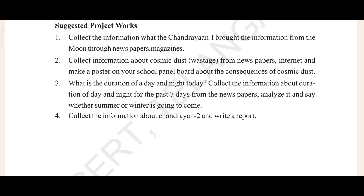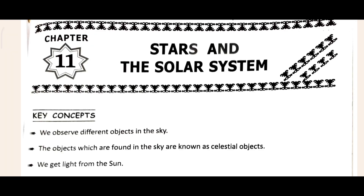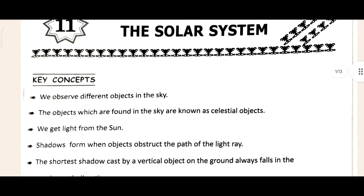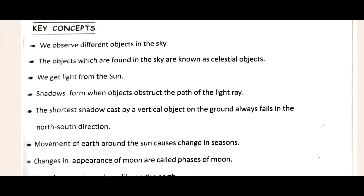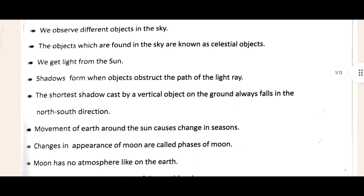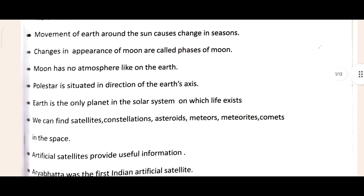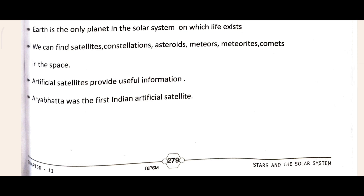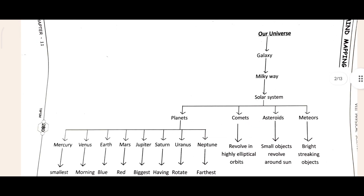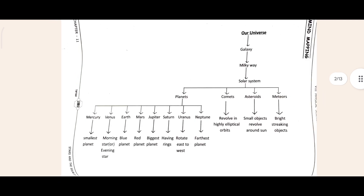Now let's move to our answers. This is our answer sheet for Chapter 11 - Stars and the Solar System. Let's see the key concept first - key concept means the important points of your chapter. After that, we have mind mapping, which gives you an idea of what we are going to understand in this chapter, like the universe, galaxy, Milky Way, solar system, and planets.